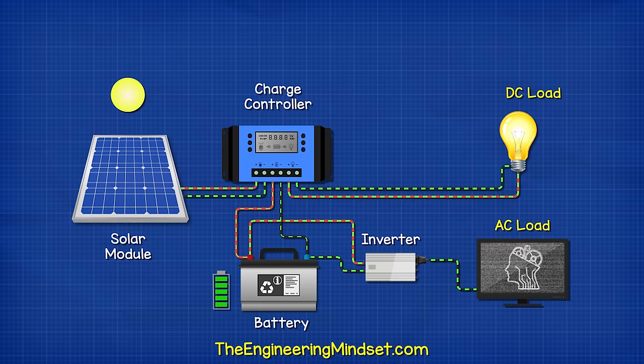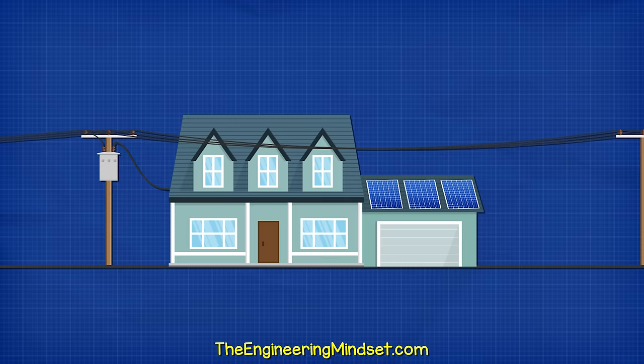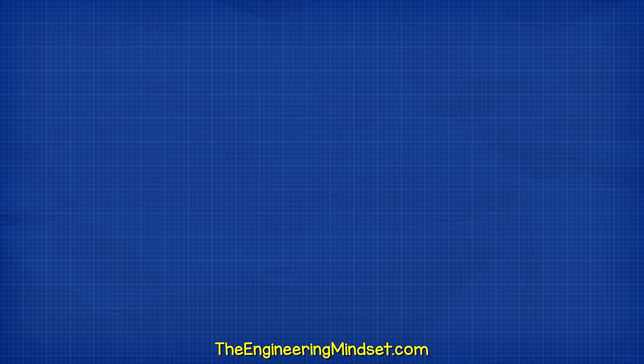But, using an inverter allows us to use both AC and DC devices from this system. However, the battery will run out of energy if it isn't recharged. For domestic and commercial installations, we therefore often connect to the electrical grid.